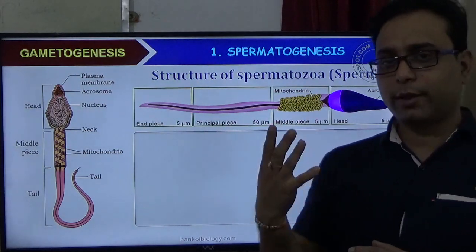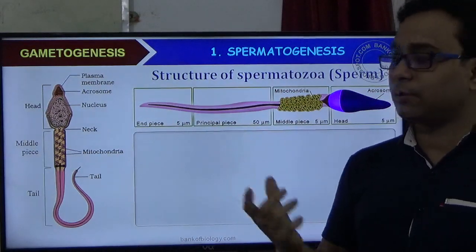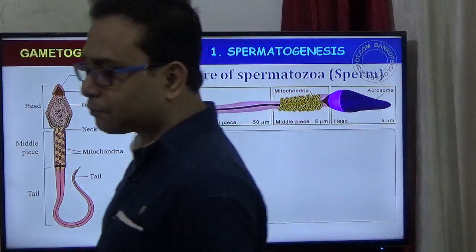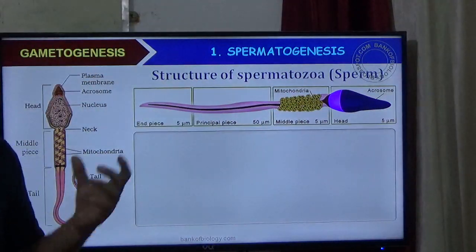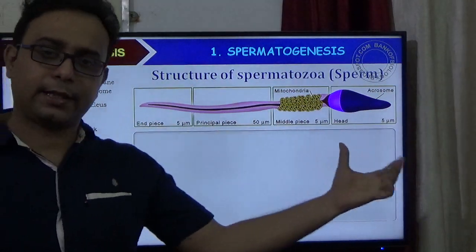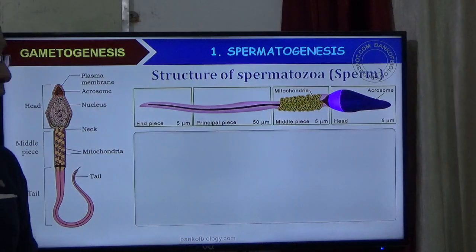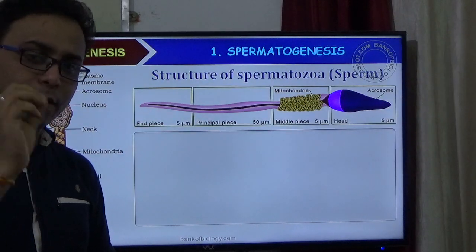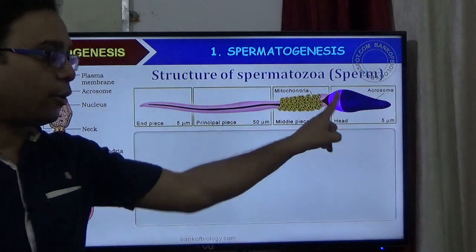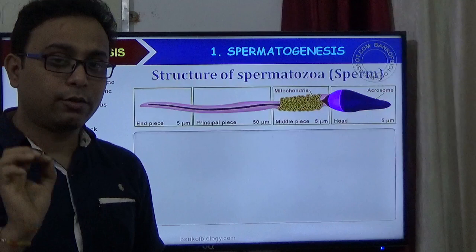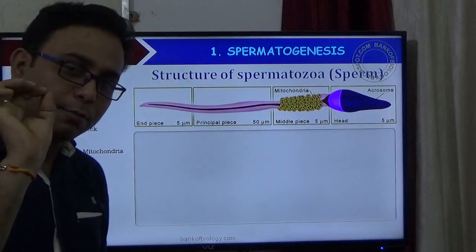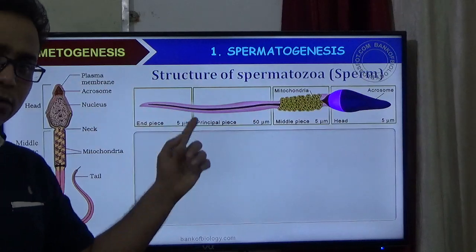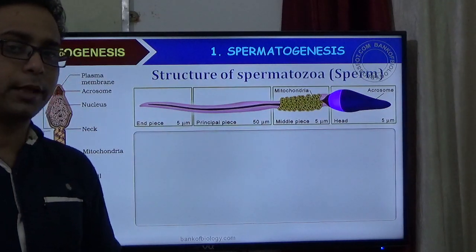The sperm is a long, slender structure. It has a head part. What is their chromosome number — haploid or diploid? Their chromosome number is haploid. You already know that 23 chromosomes are there.